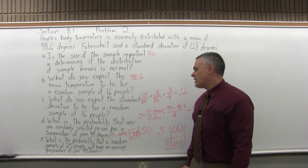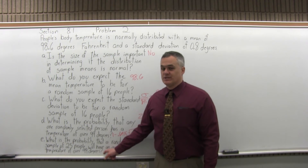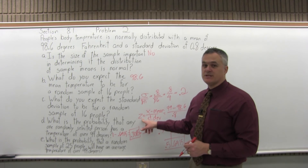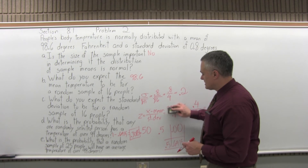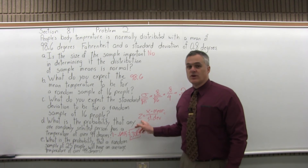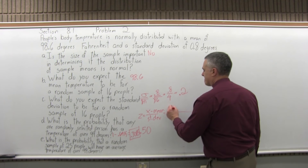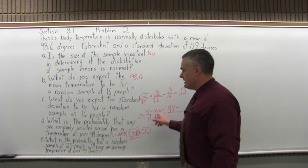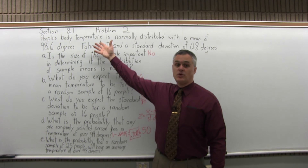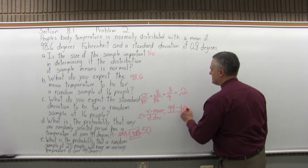Part E: what is the probability that a random sample of 25 people will have an average temperature of over 99 degrees? It's a similar process, but the Z score formula is filled in a little differently. The X is still 99, minus the mean — which for any sample from a normal distribution equals the population mean of 98.6 — so the top of the Z formula looks the same. But the denominator is different; it's not 0.2 from before. This time we have a sample size of 25.